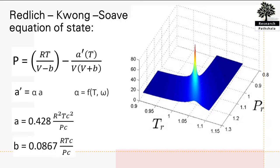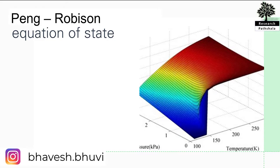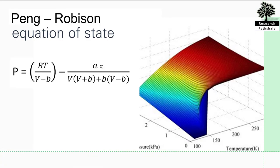ω, which is the acentric factor, is equal to -1 - log(P^sat/Pc) at Tr = 0.7. Peng-Robinson has also given an equation of state: P = RT/(V - b) - aα/(V(V + b) + b(V - b)). Similarly, here α is a function of Tr and ω.